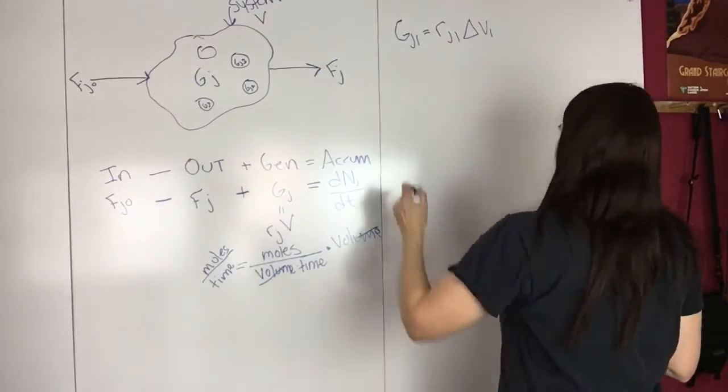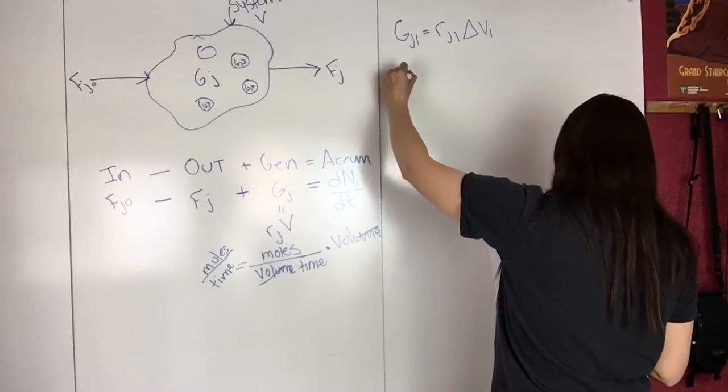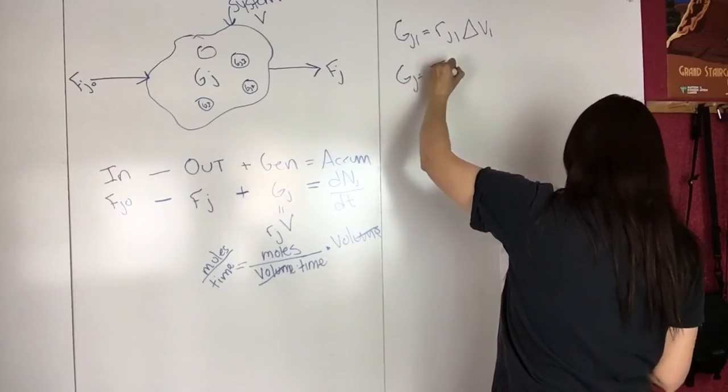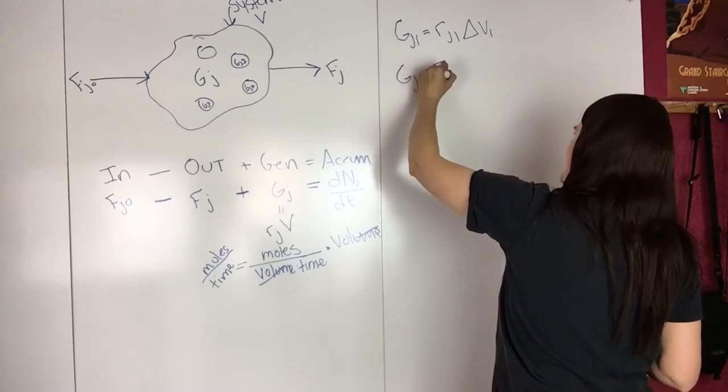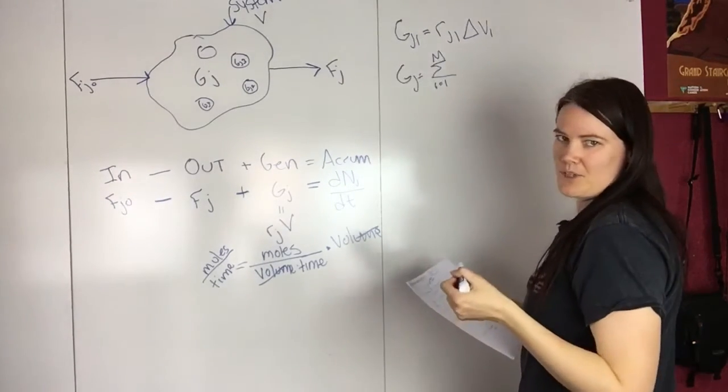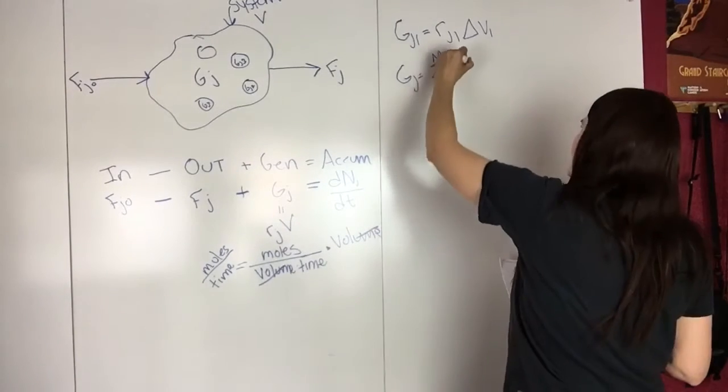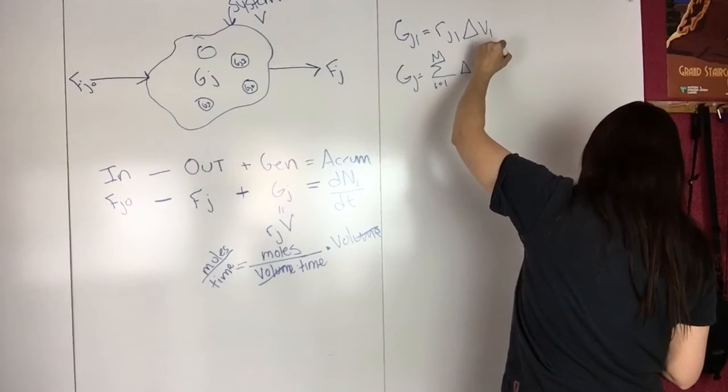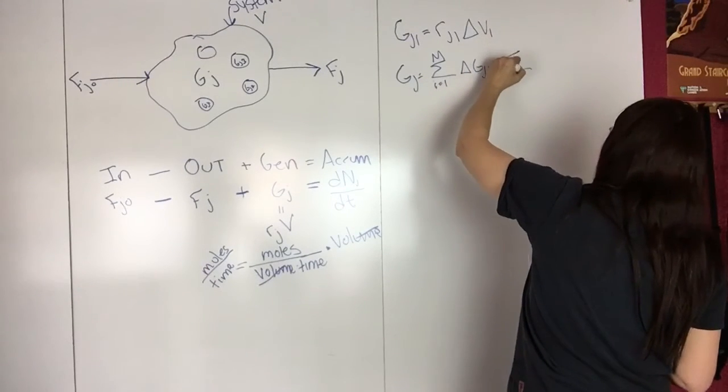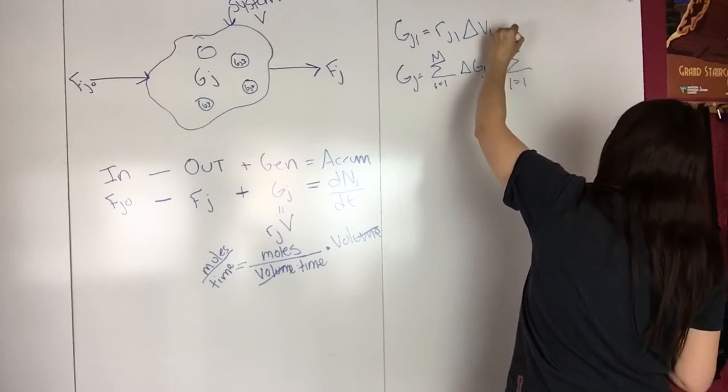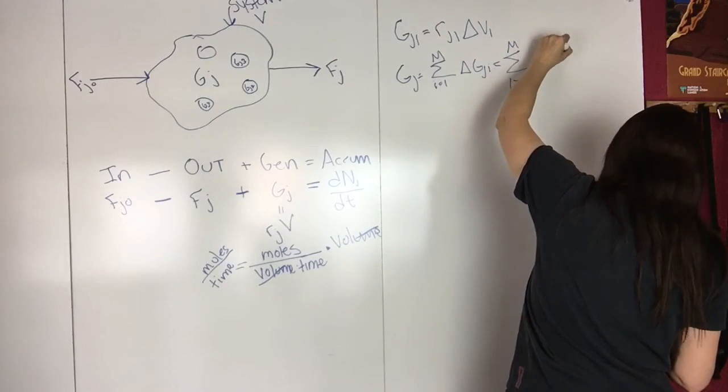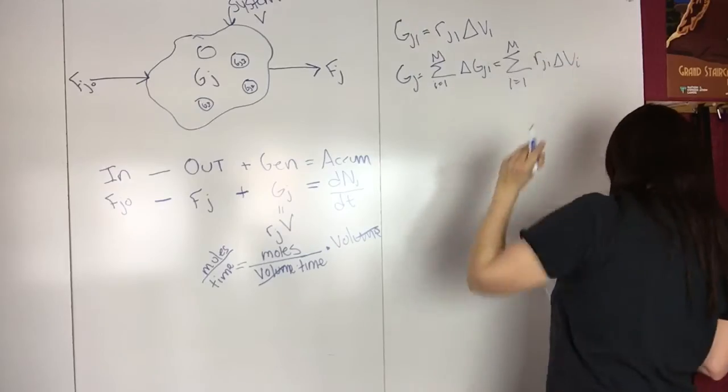And so then if you start adding these up, then you have GJ equals the sum of I equals 1 to the number of sub-volumes. So this is delta GJI equals I equals 1 to M, RJI, delta VI.